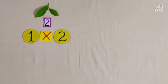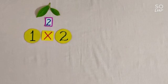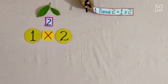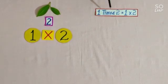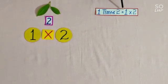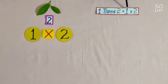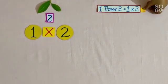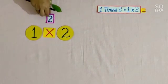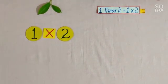So students, we will write here: 1 times 2 is equal to 1 multiplied by 2 is equal to 2.